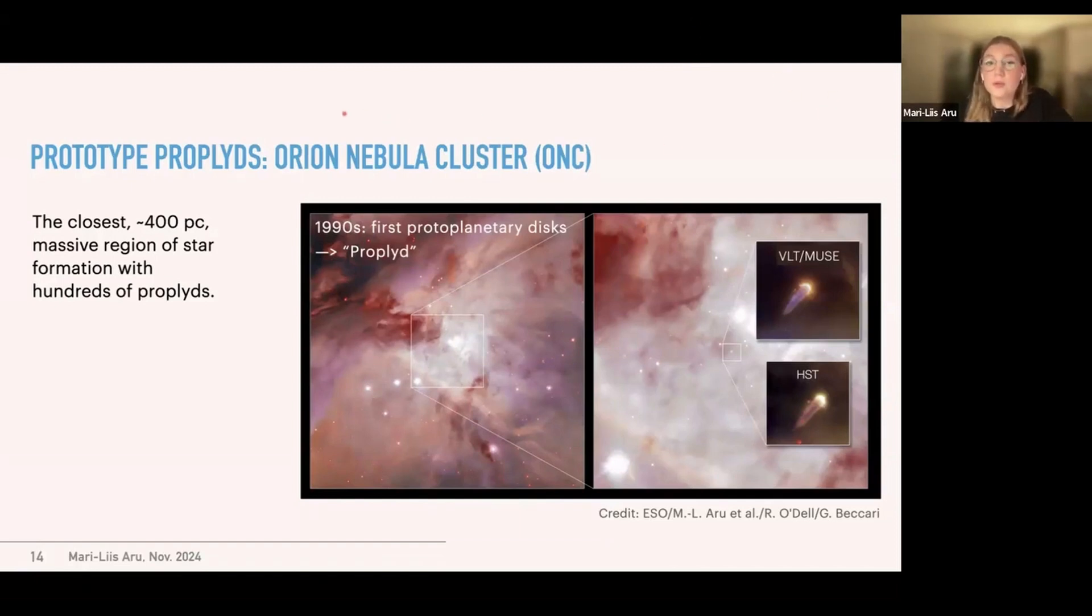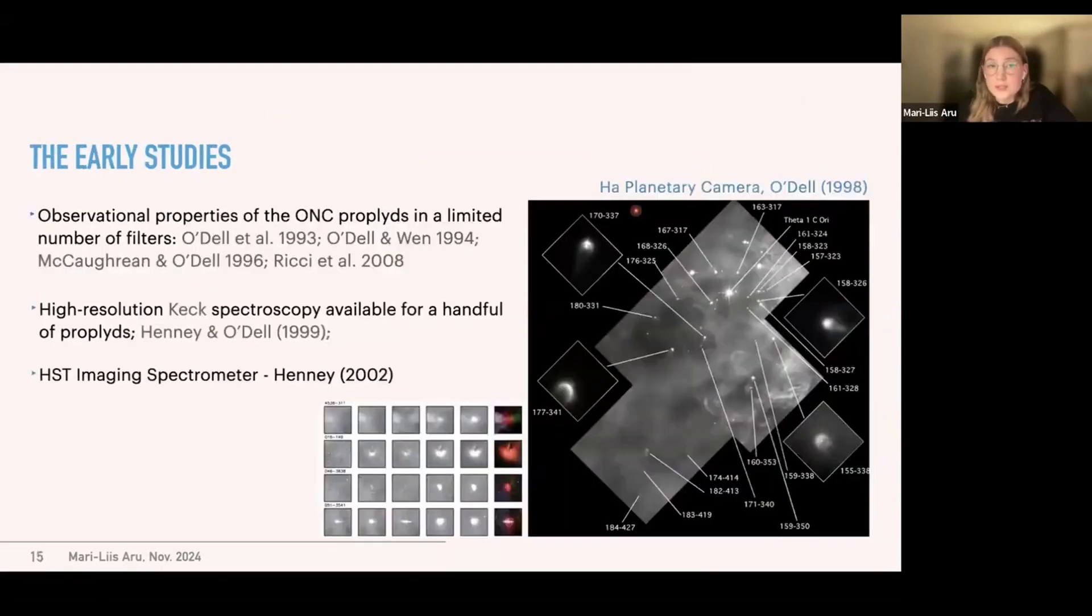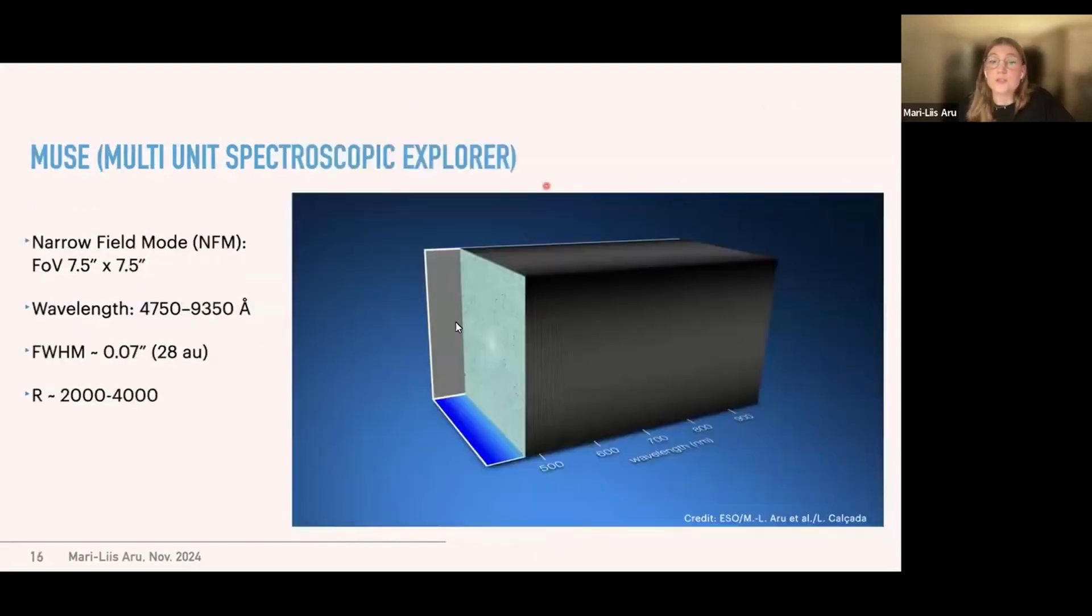The ONC is a great region for us to study because it's the closest massive region of star formation with hundreds of different proplyds. And here you can see a Hubble view of the ONC with a zoomed in view of one particular proplyd as seen with VLT MUSE versus the Hubble image. The early studies focused on various observational properties of these proplyds, but they were carried out in a limited number of filters. And there were also high resolution spectroscopic studies carried out for a handful of these proplyds. So you can see some of the examples of the filters used in here. And there is a very nice H-alpha planetary camera view of various proplyds as well.